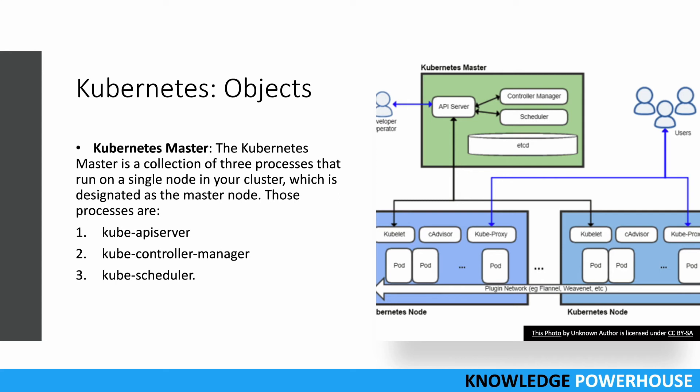The Kubernetes master is the central component - there is only one. Within it there are three main processes that manage your cluster: the kube-apiserver, which provides an API interface to Kubernetes internals and to the nodes; the kube-controller-manager, which helps control different nodes; and the kube-scheduler, which schedules workloads onto different Kubernetes nodes. The master communicates to each node via kubelet.